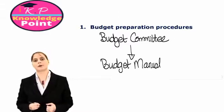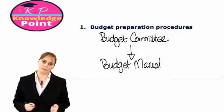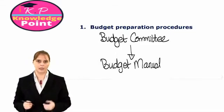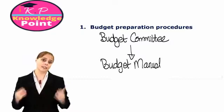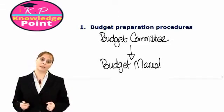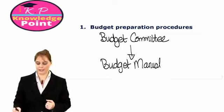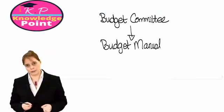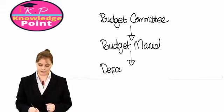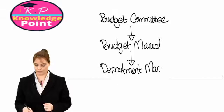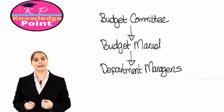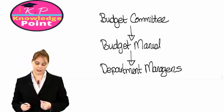The budget manual is a very important part of the process because it contains the objectives of the budgeting process and the administration procedures for how the budgets should be prepared and carried out. Effectively, it tells each manager how they need to approach preparing the budget for their department. Once the budget committee has prepared the budget manual, it is provided to the individual department managers who are responsible for preparing each department's budget.